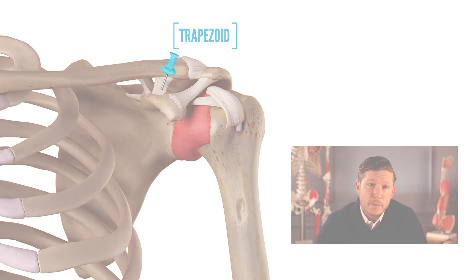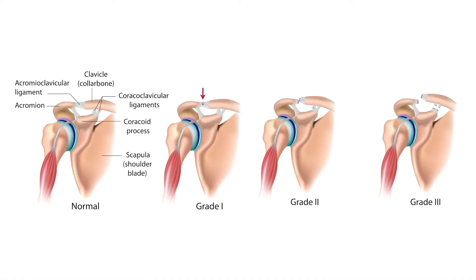This is also a common site for dislocation injuries. There are two primary types of AC joint dislocation, further classified into six grades from mild dislocation to complete separation. The first and most common is someone presenting with dislocation of the acromioclavicular joint without a ligament rupture. You can have stretching, a slight tear, or a complete tear of the acromioclavicular ligament, but without a rupture of the coracoclavicular ligament the alignment of the clavicle and acromion remains intact.